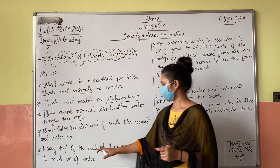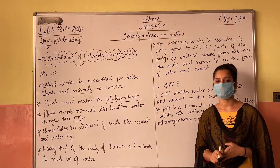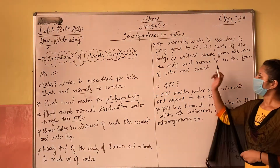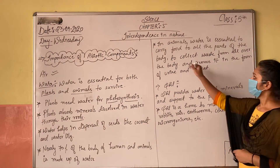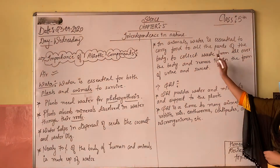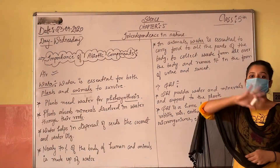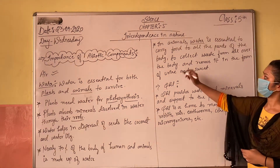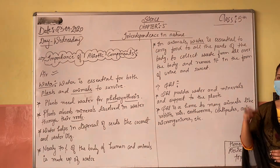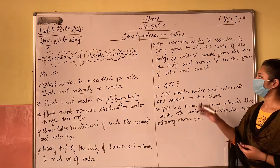Nearly 70% of the body of humans and animals is made up of water. In animals, water is essential to carry food to all parts of the body, to collect waste from all over the body, and to remove it in the form of urine and sweat.